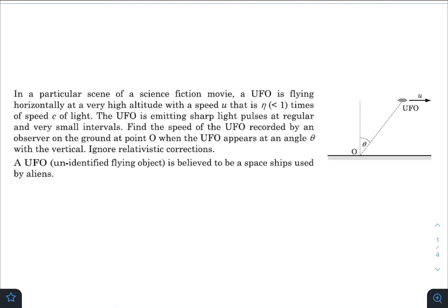Hey, what is up everyone, I hope all of you are doing great. In today's question, we have a particular scene of a science fiction movie. A UFO is flying horizontally at a very high altitude with a speed u that is η times the speed c of light, and η is less than one.